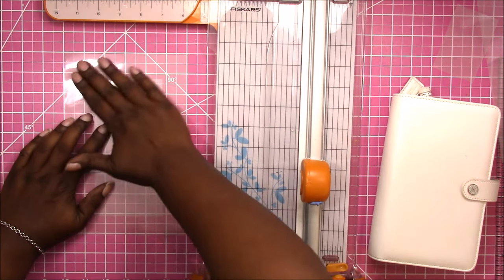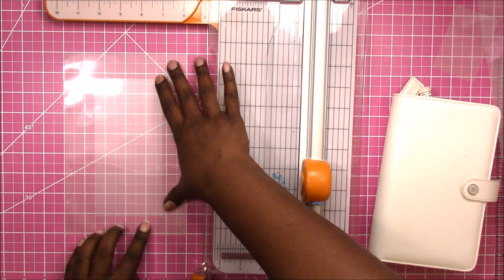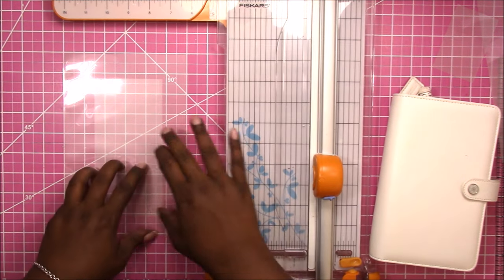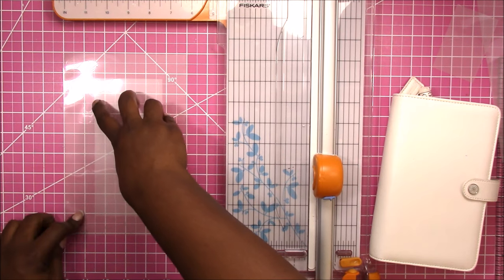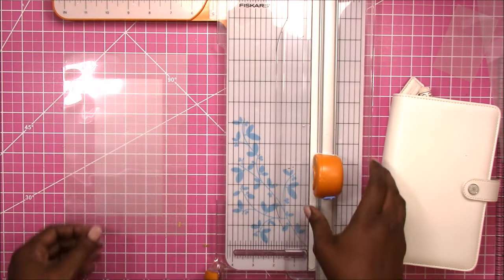Okay, so I've got the pouch in there. It's pretty straight. I left my extra room on the side for my binder holes, and I am ready to run this through the laminator.